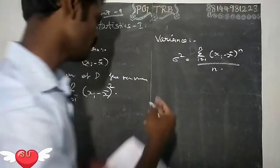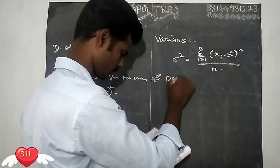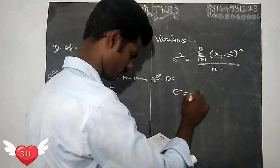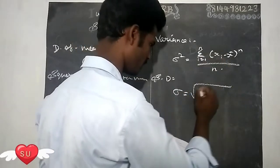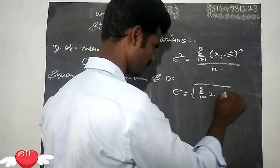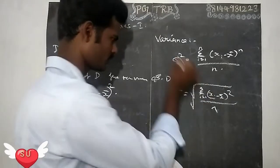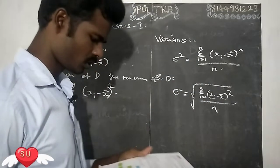Next is standard deviations. Sigma equals square root of sum from 1 to n of X_i minus X̄ whole square divided by n. So this is the standard deviations formula.